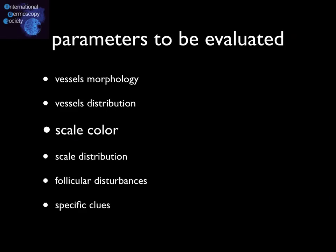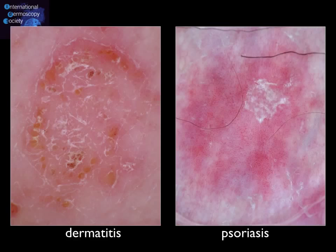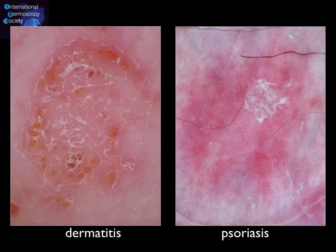The color of scales might be basically white, yellow, or a combination of the two colors. A characteristic example where the color of scales is very important is the differentiation between nummular eczema and psoriasis, which can be very difficult on clinical grounds. By applying dermoscopy, one can immediately see the yellow colored scales in dermatitis. In psoriasis, yellow scales are extremely uncommon, while typically the color of scales is white.